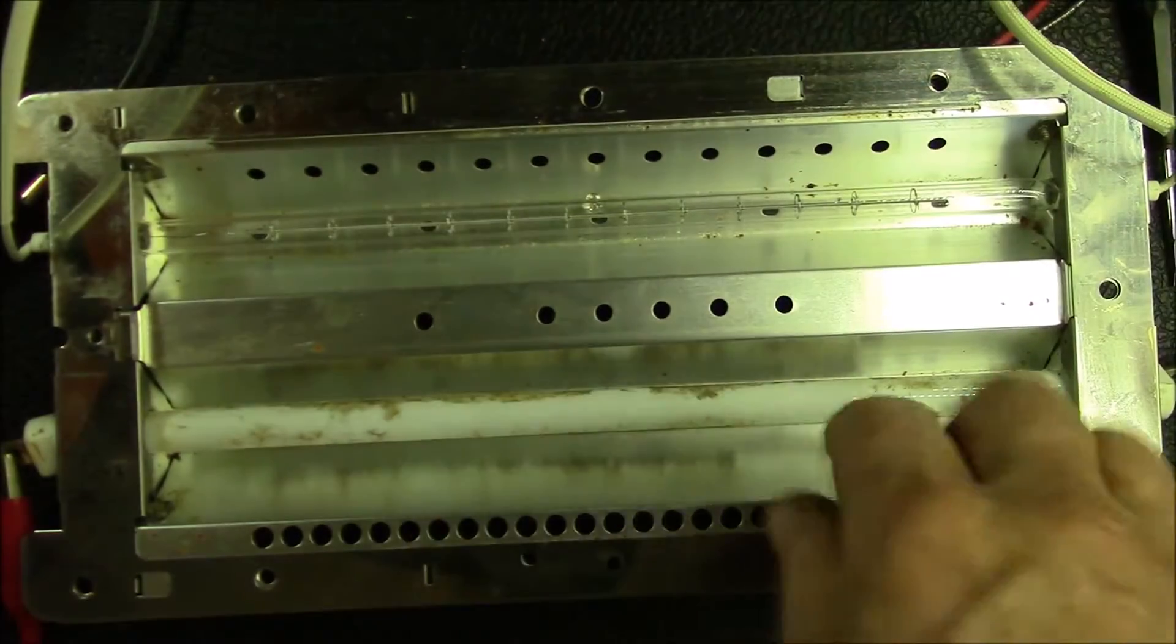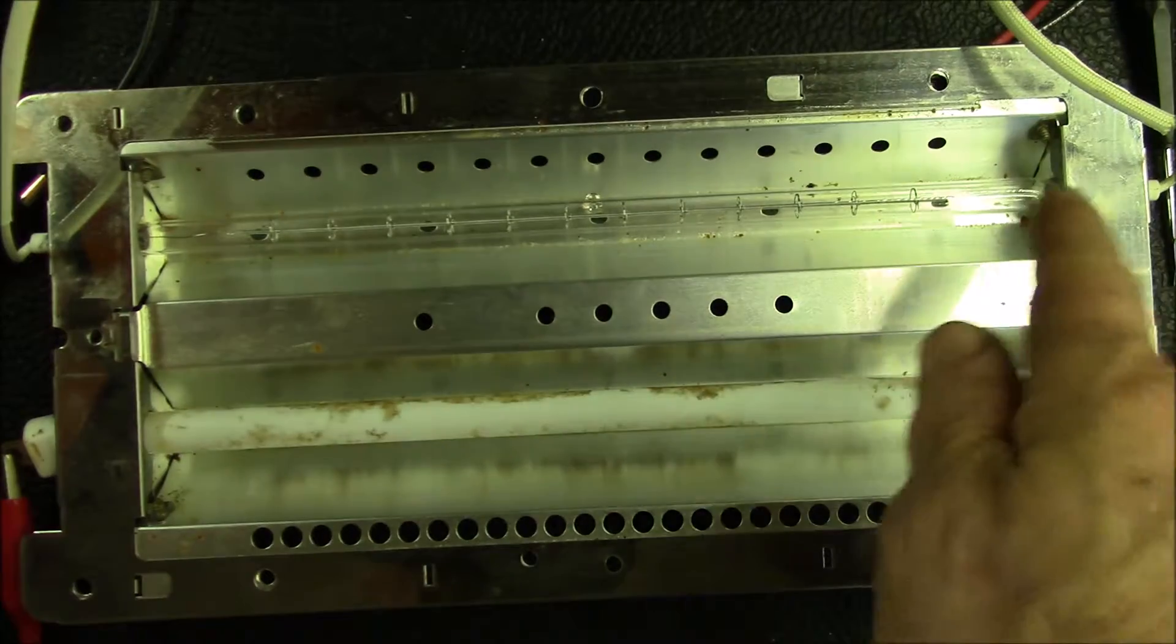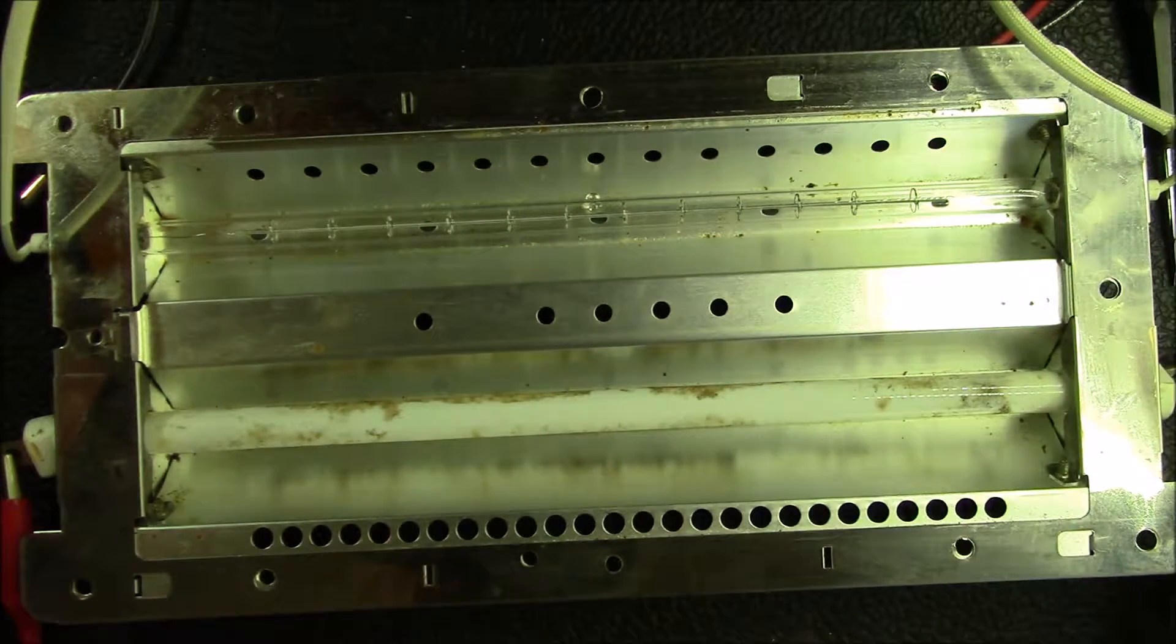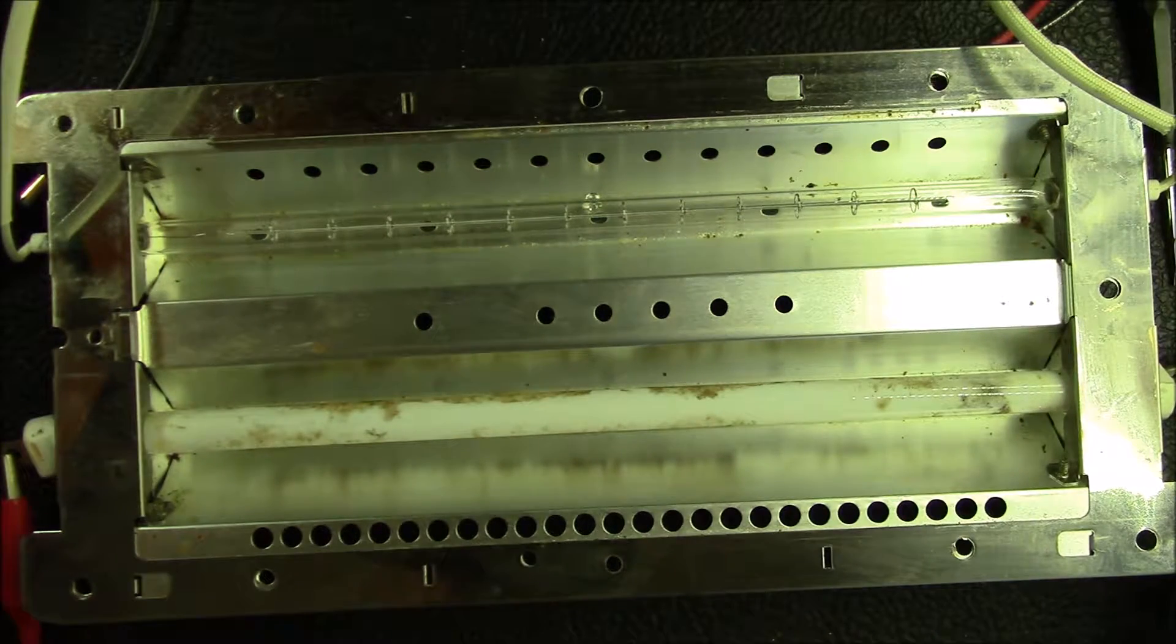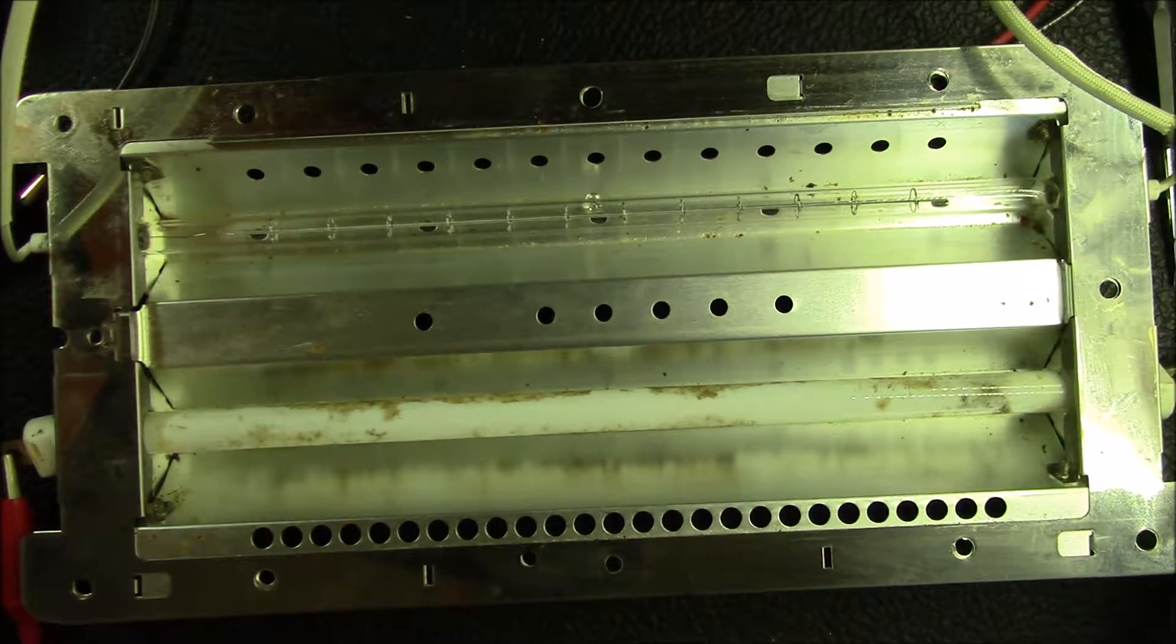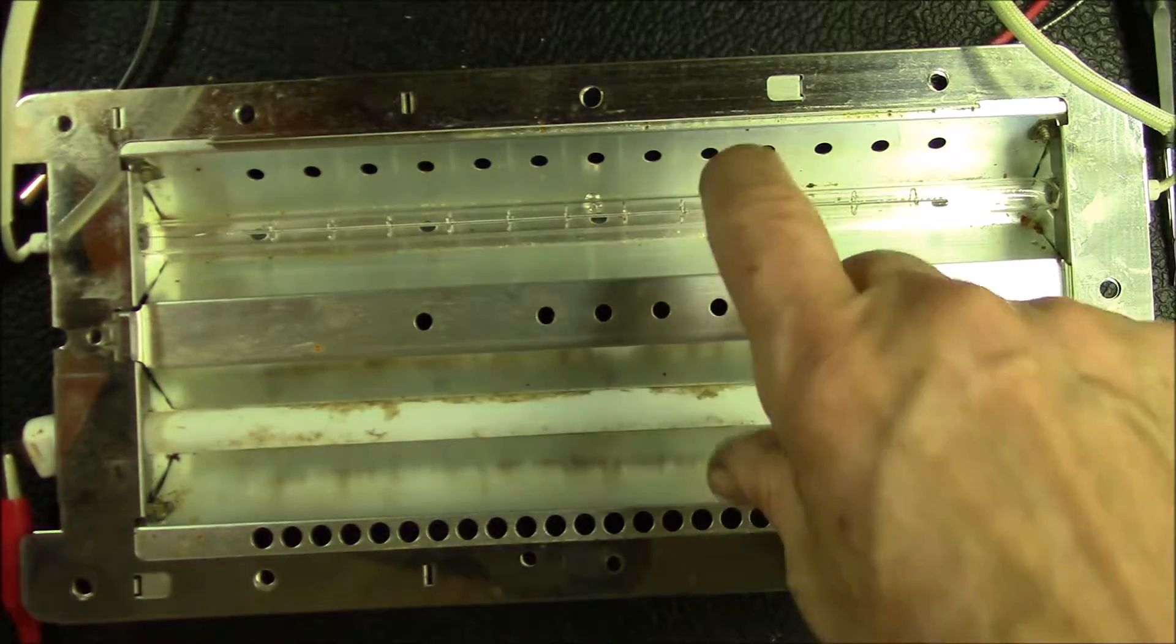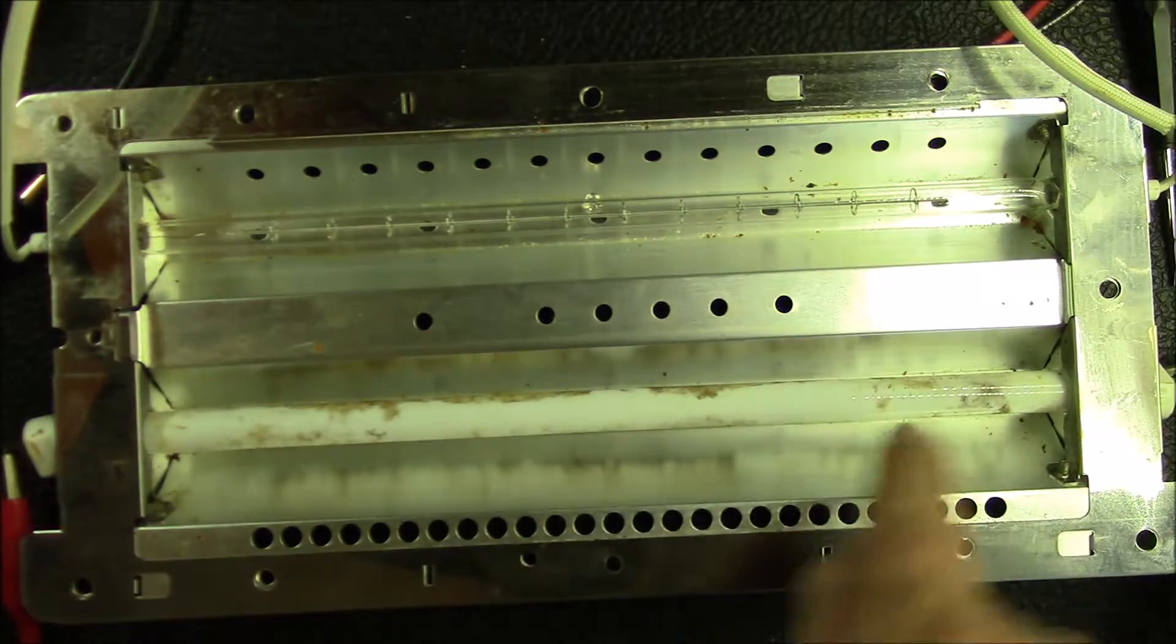So the ceramic element doesn't really do much—it just gets hot inside. Inside the oven there's also a traditional heating element that snakes over the top of this, which is I think 1100 watts. The idea is they switch back and forth between the 1100 watt element and this heater element.